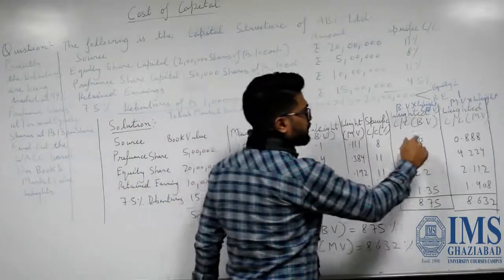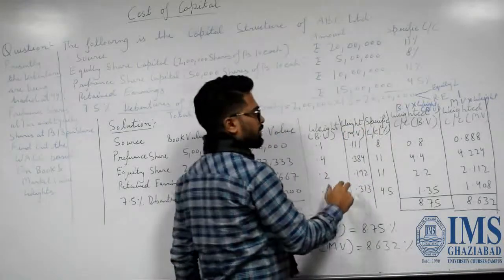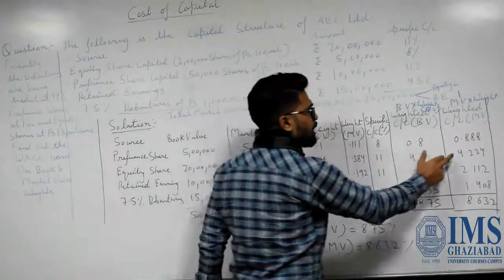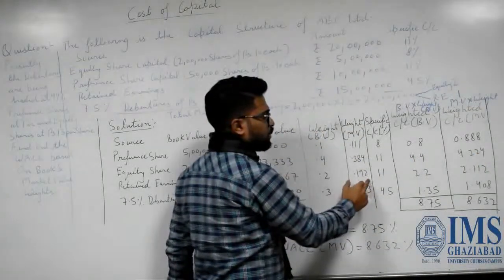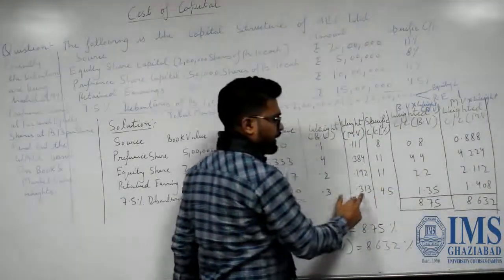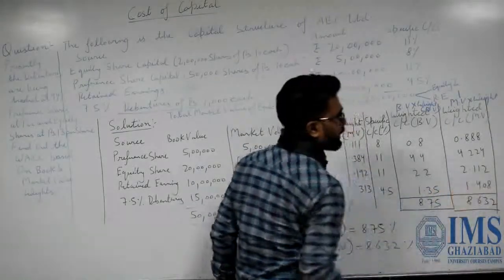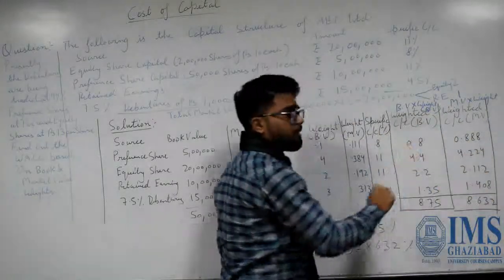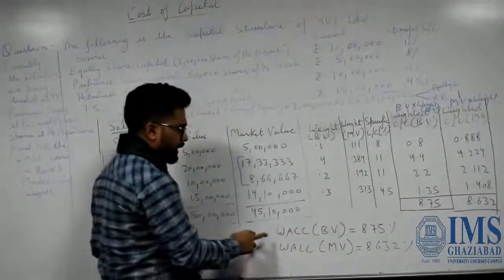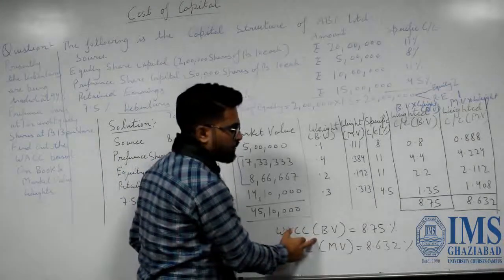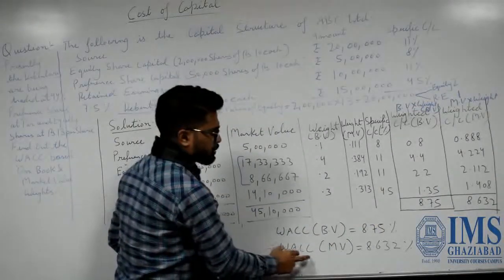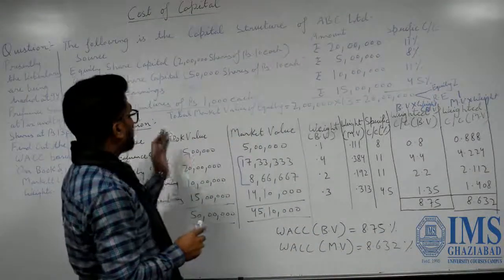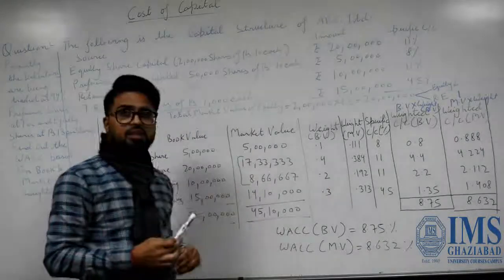For the market value method, again multiply weights by specific cost of capital: preference shares — 0.111 × 8 = 0.888; equity shares — 0.384 × 11 = 4.224; retained earnings — 0.192 × 11 = 2.112; debentures — 0.313 × 4.5 = 1.408. The total weighted average cost of capital by market value method is 8.632%. So the WACC by book value method is 8.75% and by market value method is 8.632%. This is the method of weighted average cost of capital in the cost of capital chapter. Thank you.